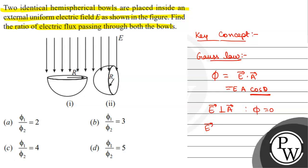And when electric field is parallel to the area vector, then phi is equal to EA.